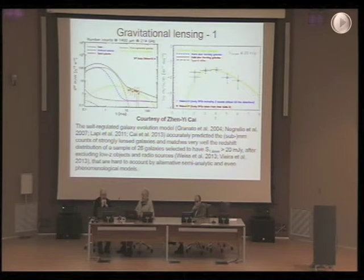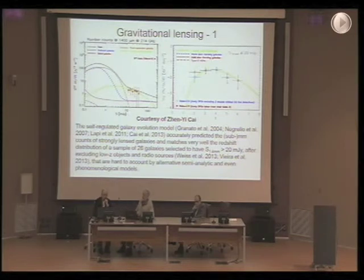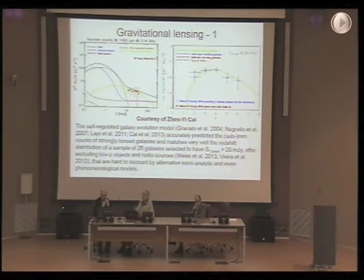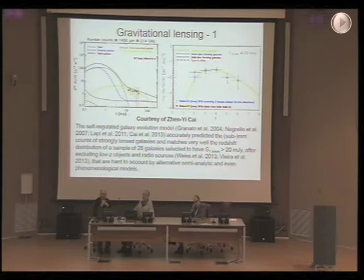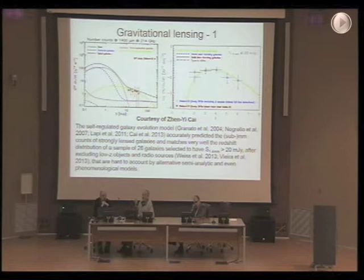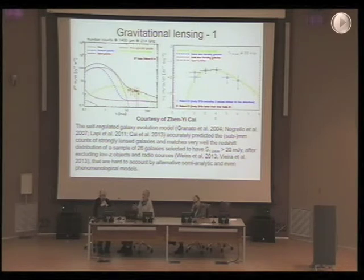Another prediction made here at SISSA in the PhD thesis by Mattia Negrello in 2007 was that this specific model implies there is a very strong gravitational lensing effect on faint sources. We expect a tail of high-redshift sources to be detected at much higher fluxes than those of unlensed objects, represented here by the dot-dashed line. The dot-dashed line shows the expected counts of unlensed galaxies at 1.4 mm wavelength, while the dots are observed counts of strongly-lensed objects, and the green line is an updated prediction of the strongly-lensed counts. These objects are typically a factor of 10 brighter than they would have been without lensing.